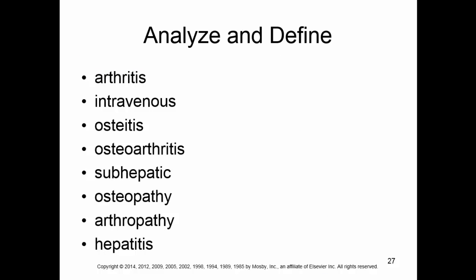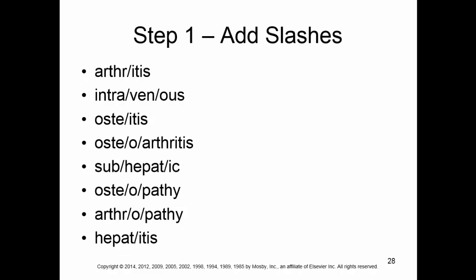So we're going to analyze and define first, then we're going to flip it around and show you the opposite. For analyzing and defining, the first thing you have to be able to do is add slashes to separate the word into parts. We will do a lot of this in class — I'm big on highlighters and different colored pens to help you identify things. They've put slashes in on these words, attempting to separate them into the word parts that we have.